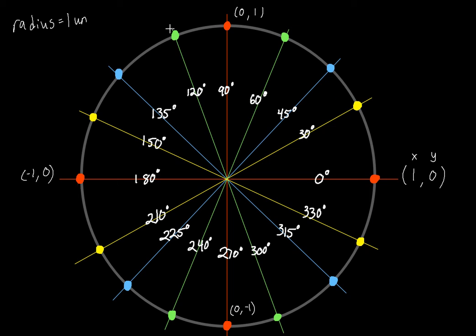These quadrantal angles are pretty intuitive — you travel 1 unit up, down, left, or right. But for all these other angles, we end up traveling in some other way. We can't just say the x value is 1 or the y value is 1, because we don't quite go that far. That's why the unit circle is filled with special right triangles.